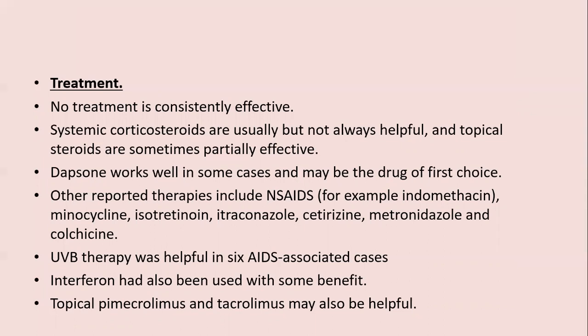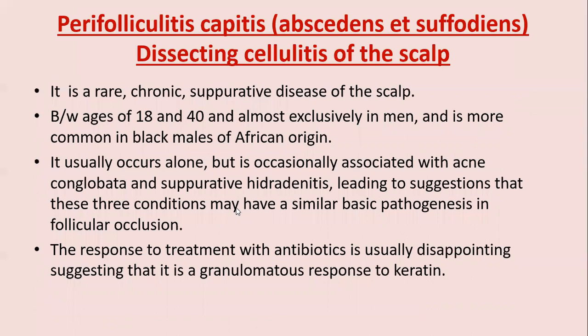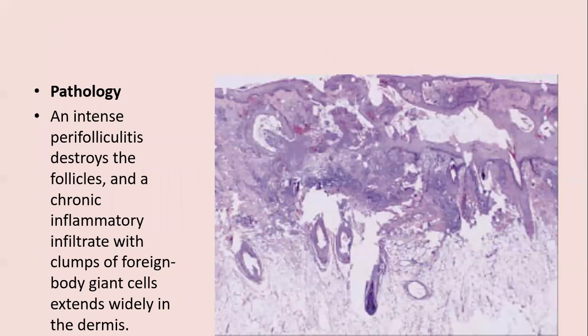Perifolliculitis capitis abscedens et suffodiens, or dissecting cellulitis of the scalp, is a rare chronic suppurative disease of the scalp occurring between ages 18 and 40, exclusively in men, more common in black men of African origin. It usually occurs alone but is occasionally associated with acne conglobata and suppurative hidradenitis, suggesting these three conditions share a similar basic pathogenesis — obstruction of follicular ostia. Response to antibiotic treatment is usually disappointing, suggesting a granulomatous response to keratin. An intense perifolliculitis destroys the follicle, and chronic inflammatory infiltrate with foreign-body giant cells extends widely into the dermis.